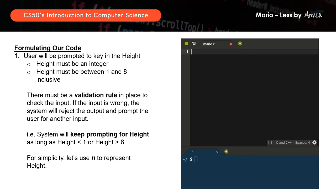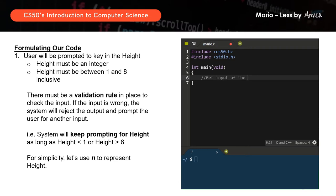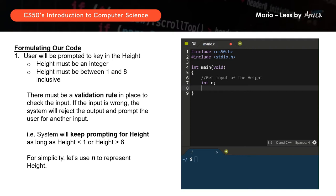Let's hop over to our program and start with the usual header. We'll include cs50 and standard io. Then we'll start with int main void. Now I'm going to write a comment that this portion will get the input of height. We need to tell the system there will be an input called height which is an integer, so we'll signpost it with int n. This means there will be an integer we will refer to as n.